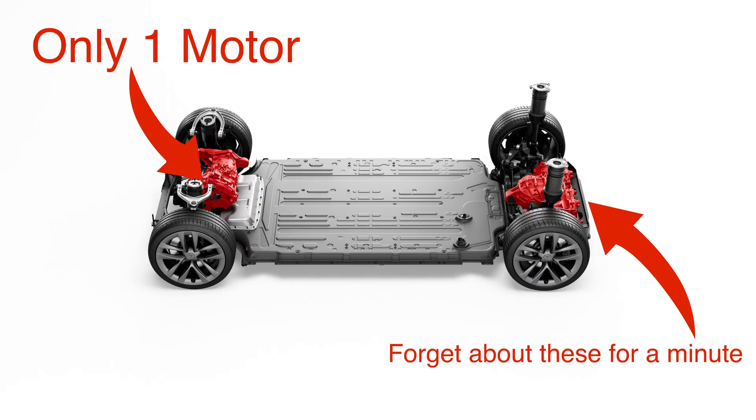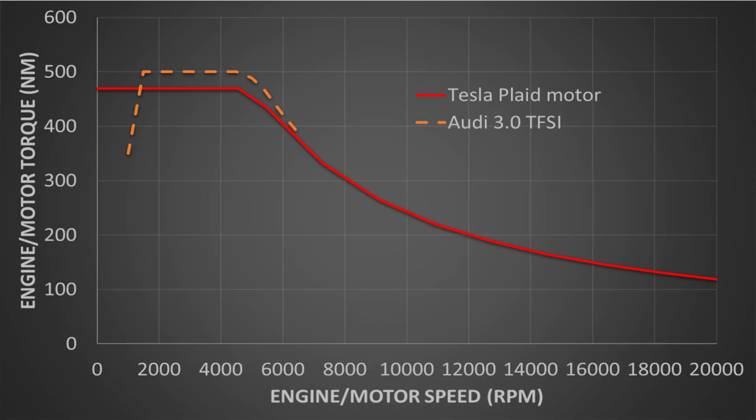Now, let's compare to a single electric motor from the Plaid. The Tesla has a 470 newton meter peak torque, just slightly lower than the Audi. However, the Plaid motor achieves this peak torque from nearly zero RPM and goes all the way up to 20,000 RPM, maybe a little more, all while maintaining peak power. This is three times as much speed capability as the Audi and is starting to show why a transmission may not be necessary.